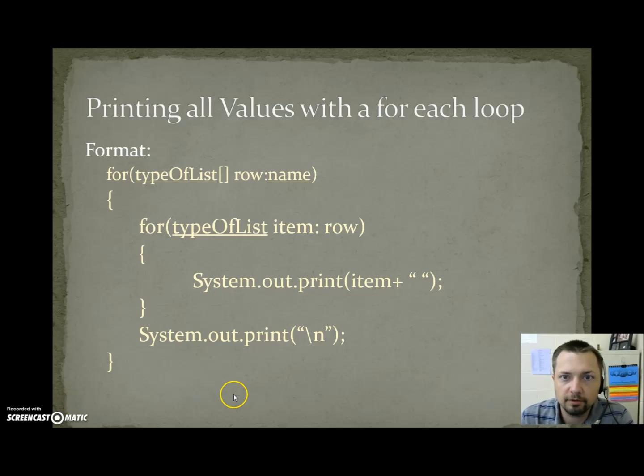Now we're going to go over how to print all the items in a 2D array with a for-each loop. The first thing we're going to do is for whatever type of list you have, bracket bracket row equals name. What this does, it actually pulls an entire row of data. So you're doing a for-each loop to go through every row. Once you have a row, we can do a for-each loop, because the row is a 1D array. So we do a for-each loop to go through the 1D array. And we've already talked about how a for-each loop works with a 1D array. So it prints every item, separated by spaces. Then after that loop finishes, we print to the next line. Then when we come around, we grab the next row and then print everything in that row, move to the next line. We keep doing this until we run out of rows. Let's look at an example.